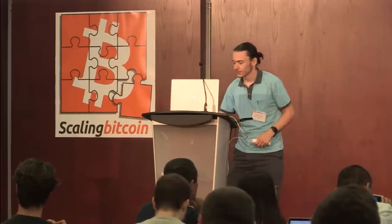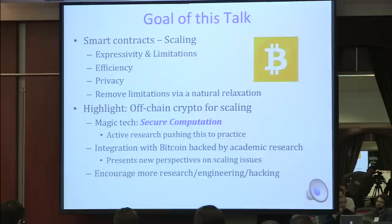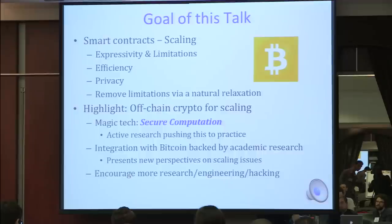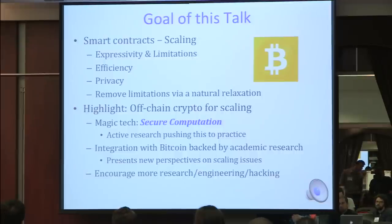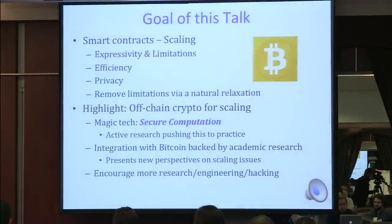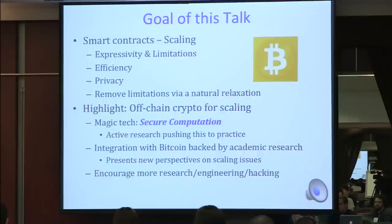We'll be looking at how much expressivity we can support and what limitations we might encounter, then look at efficiency issues and privacy guarantees. I'll talk about some potential relaxations that will help remove fundamental limitations in expressive power and make smart contracts more usable. The main highlight of this talk is the use of off-chain crypto for scaling purposes—the magic technology being secure computation, an active area of research currently being pushed into practice.